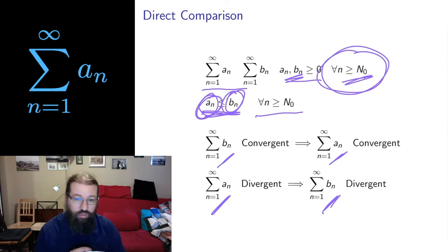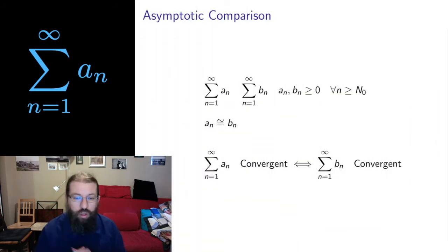If the smaller series converges, we don't know anything about the larger series. If the larger series diverges, we don't know anything about the smaller series. Direct comparison is useful, but it's not the most useful comparison. The most useful comparison, in my opinion, is asymptotic comparison.